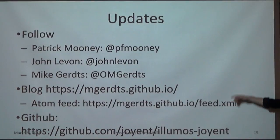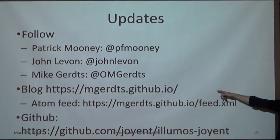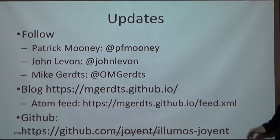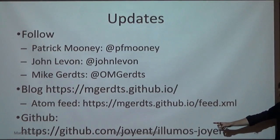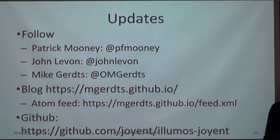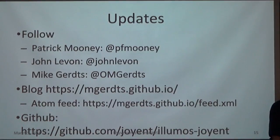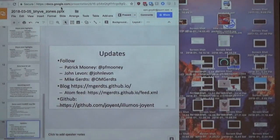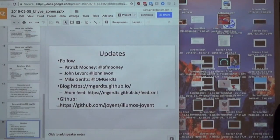If you want updates, you can follow these guys on Twitter. This is Mike's blog — the guy who wrote these slides — and here's his RSS feed. This is the GitHub repo where all this work is being done under the Illumos joint. That covers Illumos Beehive, and now Sean is going to talk about FreeBSD Beehive.